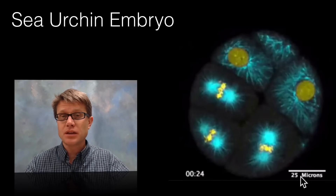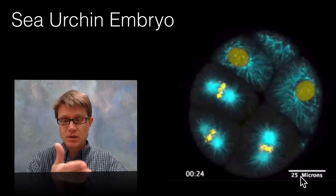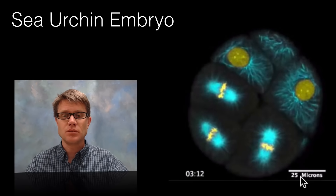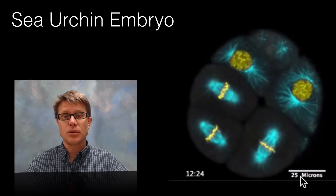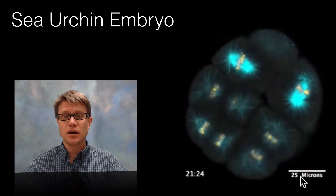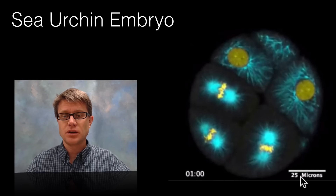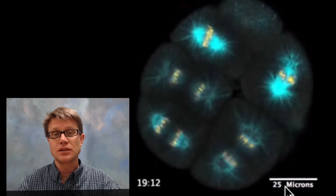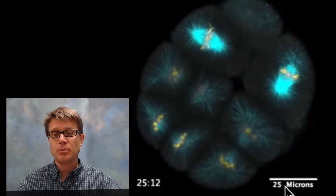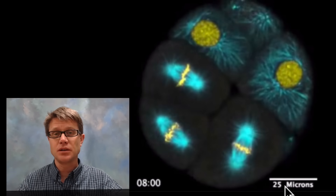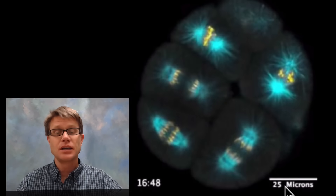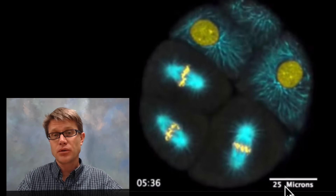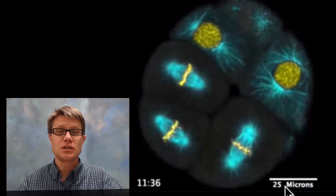The big thing to understand is that mitosis is not just individual phases snapping between them — it's a movie. This is a sea urchin undergoing cell division, becoming a larva and eventually an adult. In this time-lapse, yellow represents the chromosomes and blue represents the microtubules that make up the spindle, which allows us to divide the nuclei in half. It makes more sense to go through the whole movie before getting into individual phases.